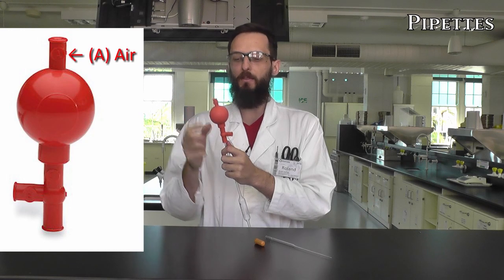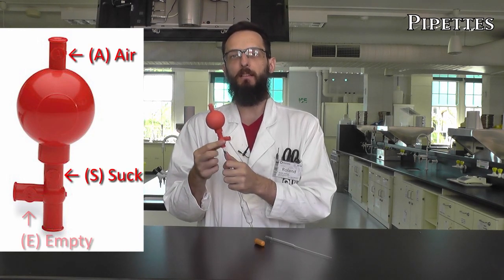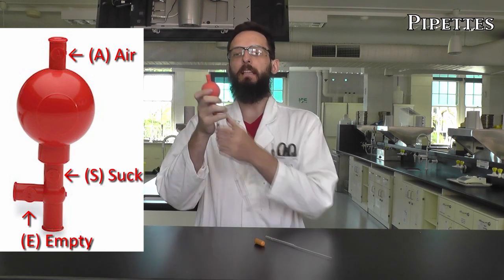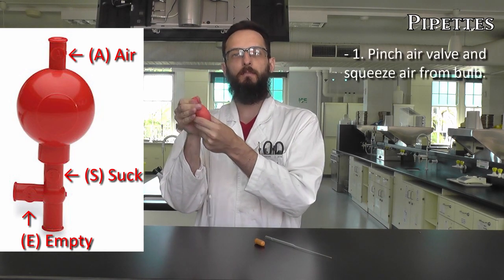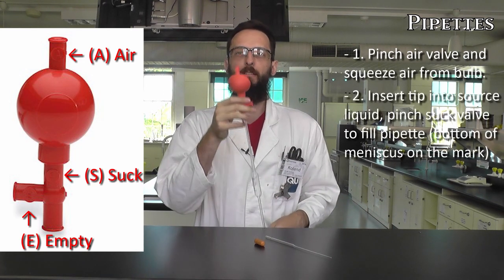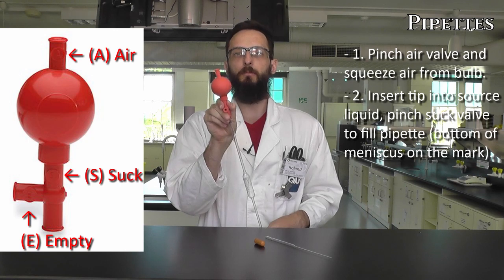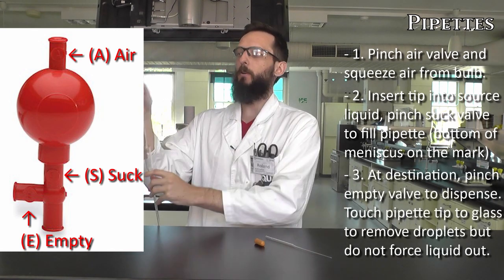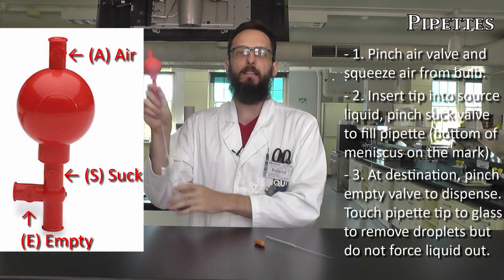This pipette bulb has three valves, the one at the top is marked air, the one in the middle is marked suck, and the one at the bottom is marked empty. So similarly to the other pipette bulb, I would simply hit the air valve, squeeze air out, put the tip into my source liquid, hit the S for suck, you see the bulb refills, and it would suck liquid up to this mark, then we transfer over and we hold the empty valve to empty at our destination.